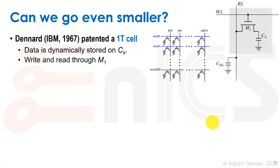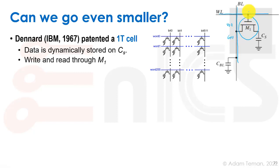The question is whether we can go even smaller. Dennard — of Dennard scaling — invented DRAM, and in 1967 he patented a one-transistor cell. This cell has a word line and a bit line, and just one transistor serving as both read and write port. To write, we put VDD or GND on the bit line, enable the word line, and get either VDD minus VT or zero stored on CS.